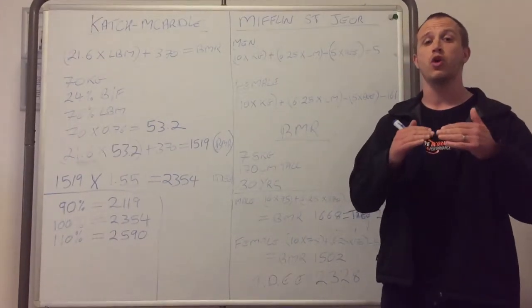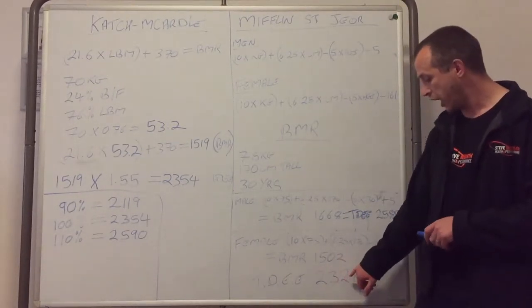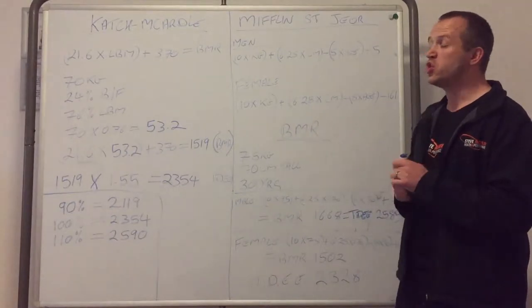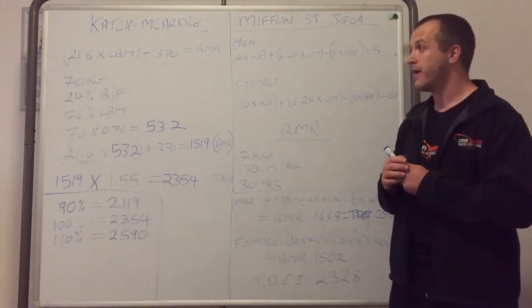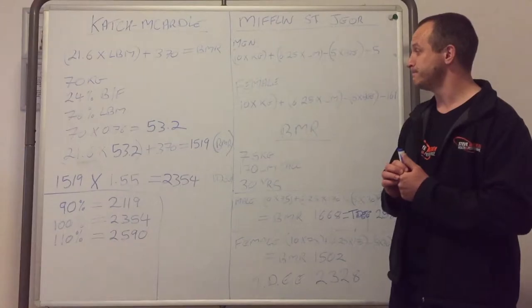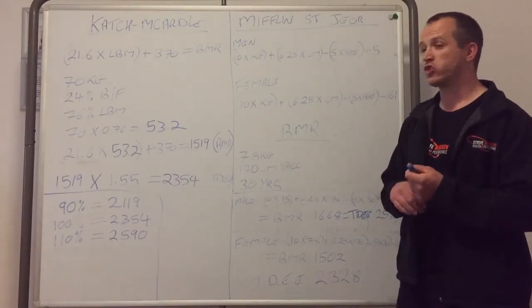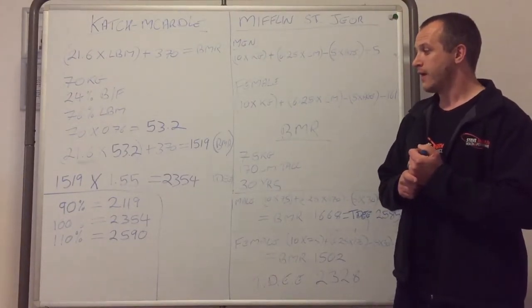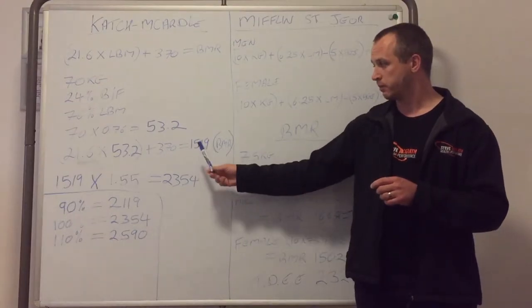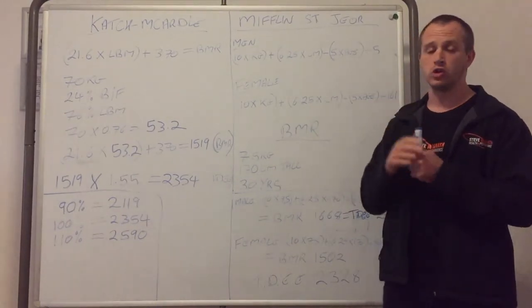And again, it doesn't really matter which one you use because you're going to have to end up adjusting them anyway. They're only a starting point, but they're a great starting point. So that's two methods we use. You don't need to be bogged down by having 100 different ones. You just need to find what suits yourself. And if you've decided to count calories, find your starting point. Find your Total Daily Energy Expenditure by multiplying your BMR by the activity factor, and then adjust your calories slightly to lose or gain weight.